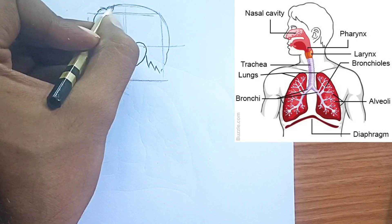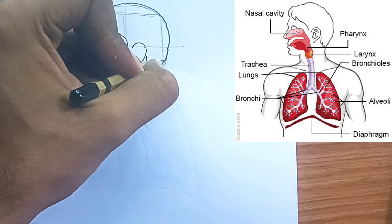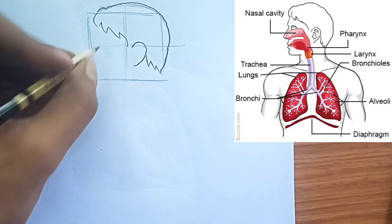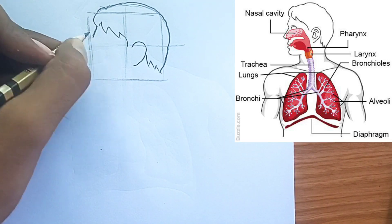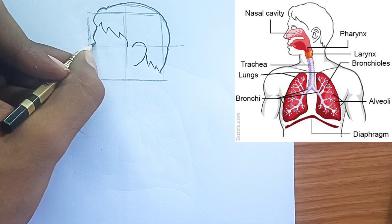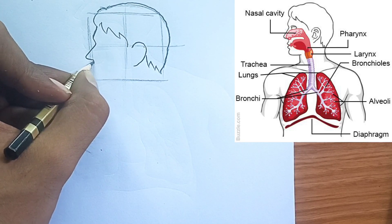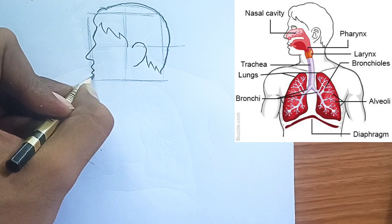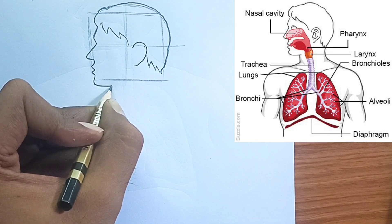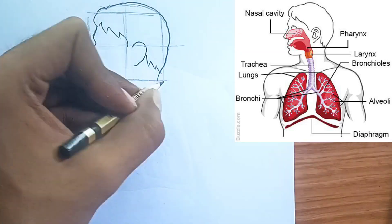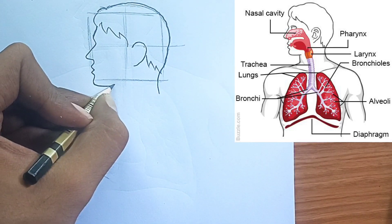Pharynx: From the nose and mouth, air passes into the pharynx, a common passageway for both air and food. Larynx — Voice box: Next, air travels through the larynx, which contains your vocal cords. As air passes over these cords, they vibrate to produce sound. A flap of tissue called the epiglottis sits above the larynx and prevents food from going down the wrong way into your airway when you swallow.